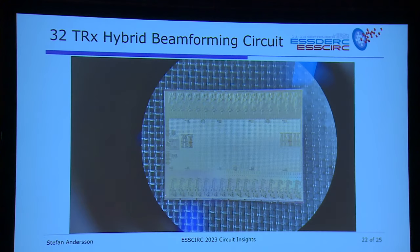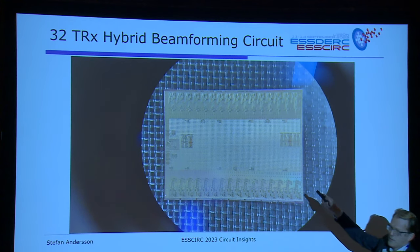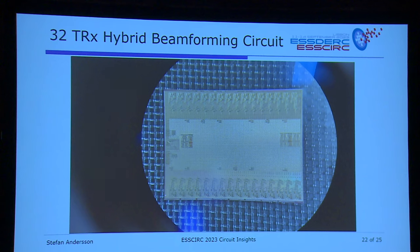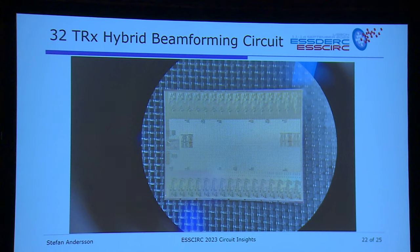Looking at the 32-transceiver design more closely: 16 transceivers at the bottom, 16 at the top, plus a lot of digital circuitry. It's quite complex — close to the maximum chip size allowed in this technology. But that's what it takes to make those arrays.